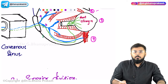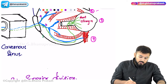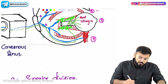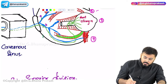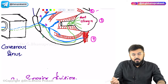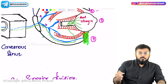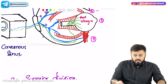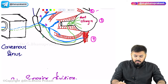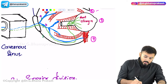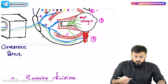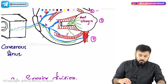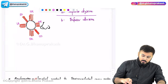The superior division supplies the superior rectus (muscle two). The inferior division gives three branches: one to the medial rectus (muscle three), one to the inferior rectus (muscle five), and one to the inferior oblique (muscle four).